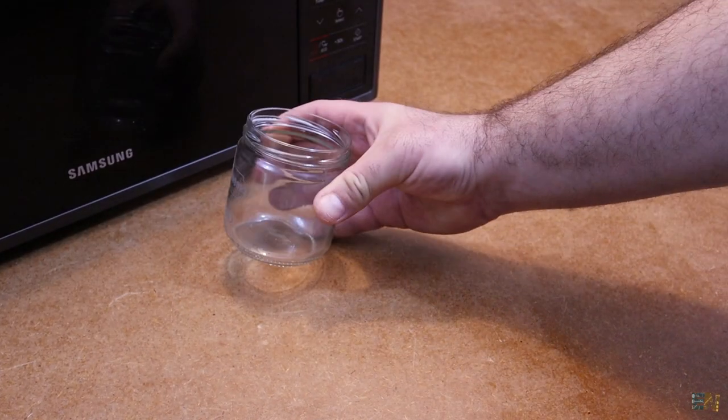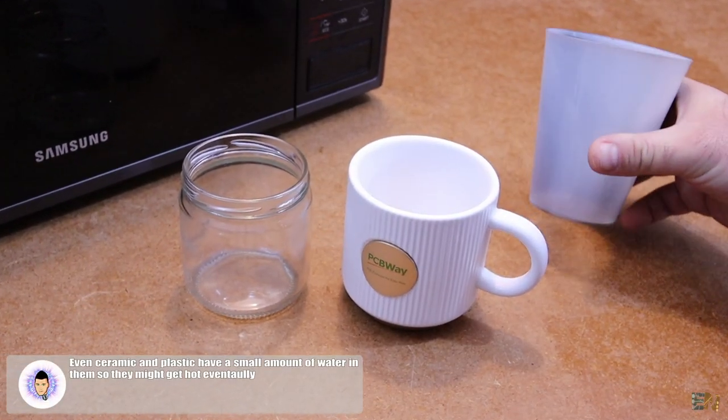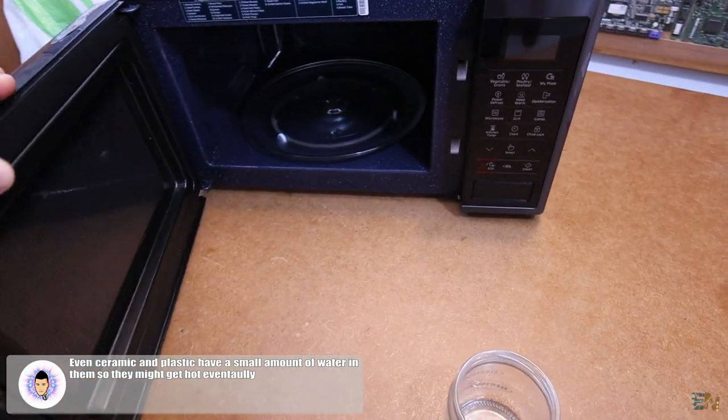And that's why if you place something without water inside of a microwave oven, it won't get hot, such as an empty glass container, ceramic, plastic and so on.